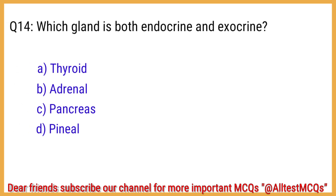Q14. Which gland is both endocrine and exocrine? The right answer is option C: Pancreas.